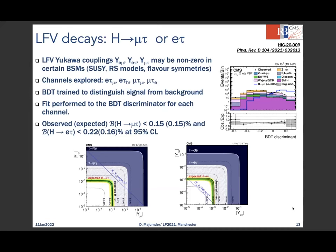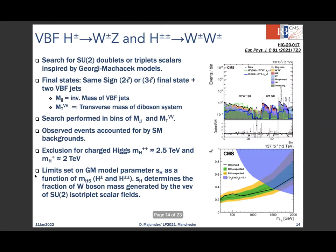For lepton-flavor-violating Higgs decays — not allowed in the Standard Model but supported by several BSM models — CMS has published results exploring eτ and μτ couplings, both left-handed and right-handed. Limits on the LFV couplings are derived; expected limits for the left-handed couplings are nearly identical between experiment configurations, with slightly different exclusion ranges for right-handed couplings.